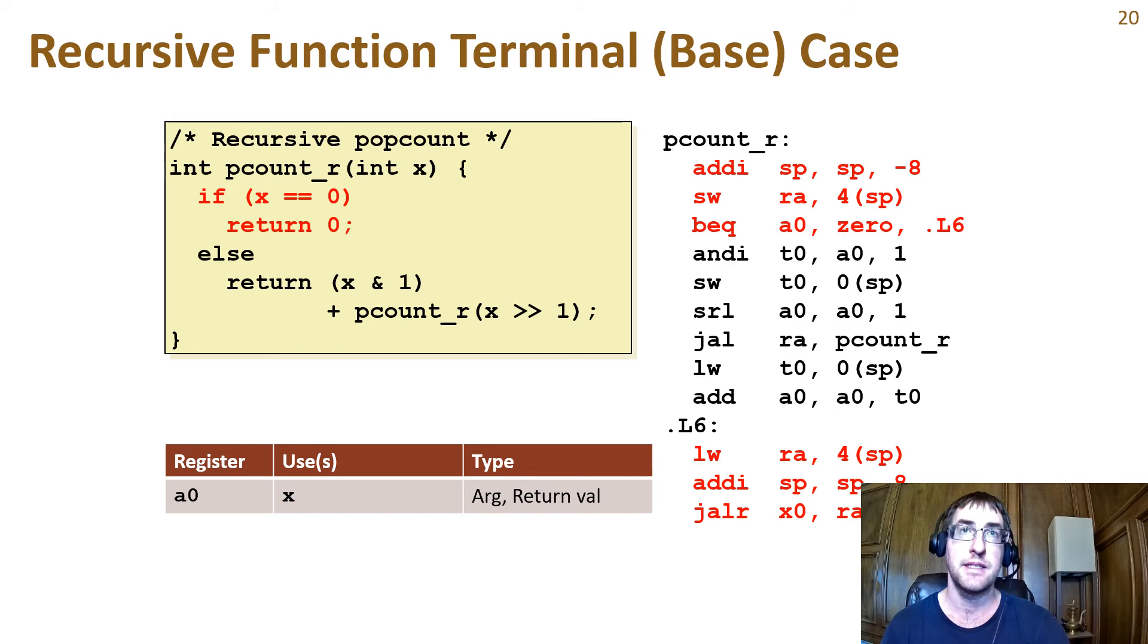Here is the recursive base case. We're done when the input variable is 0. First the stack is adjusted and the return address is saved. We do this in all cases. Then we do a branch if equal to compare the input argument with 0 and jump to the L6 label if x is 0, where we restore the return address from the stack, adjust the stack base to where it was, and return. Let's proceed if x is not 0.